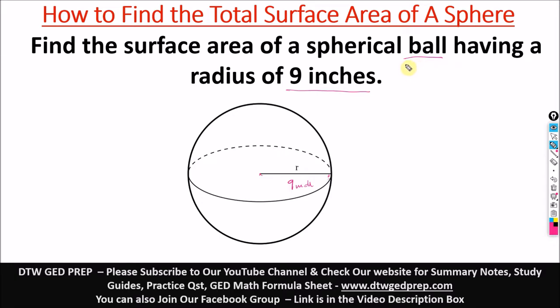Here from our GED math formula sheet, which you can get on our website, I'll leave the link in the video description box. The surface area of the sphere, SA, is 4πr². It's as easy as that. You don't need to memorize all these formulas. Your math sheet should be provided on your GED test day.